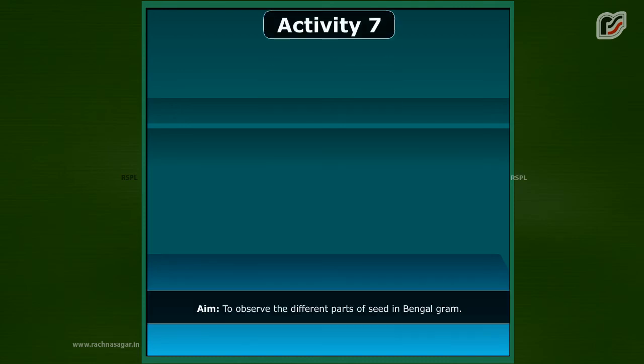Activity 7. Aim: to observe the different parts of seed in Bengal gram.